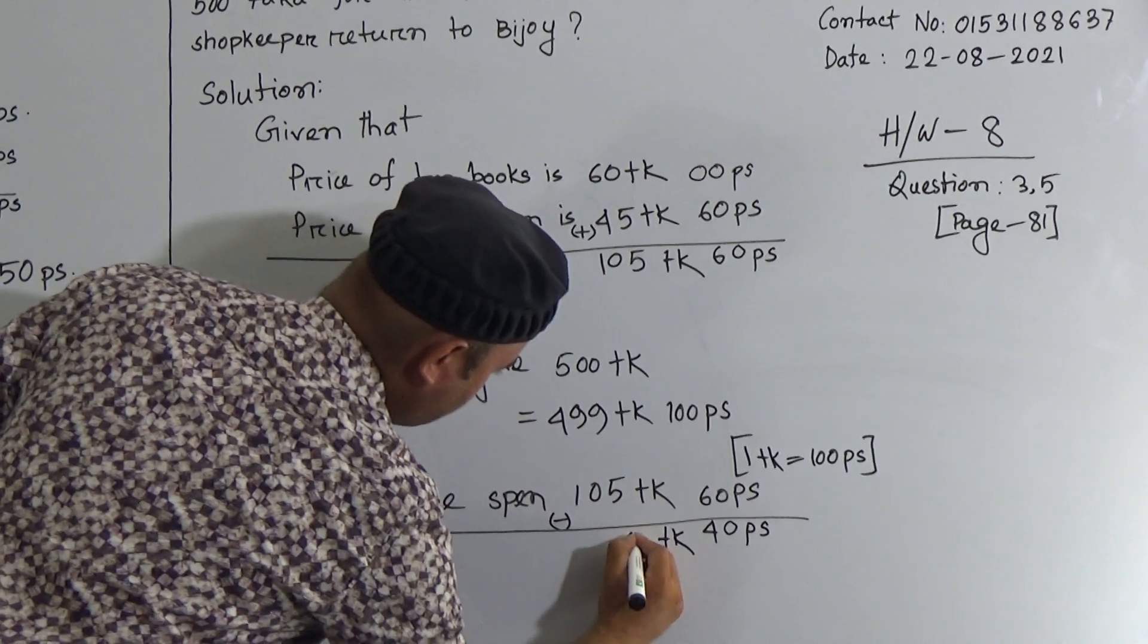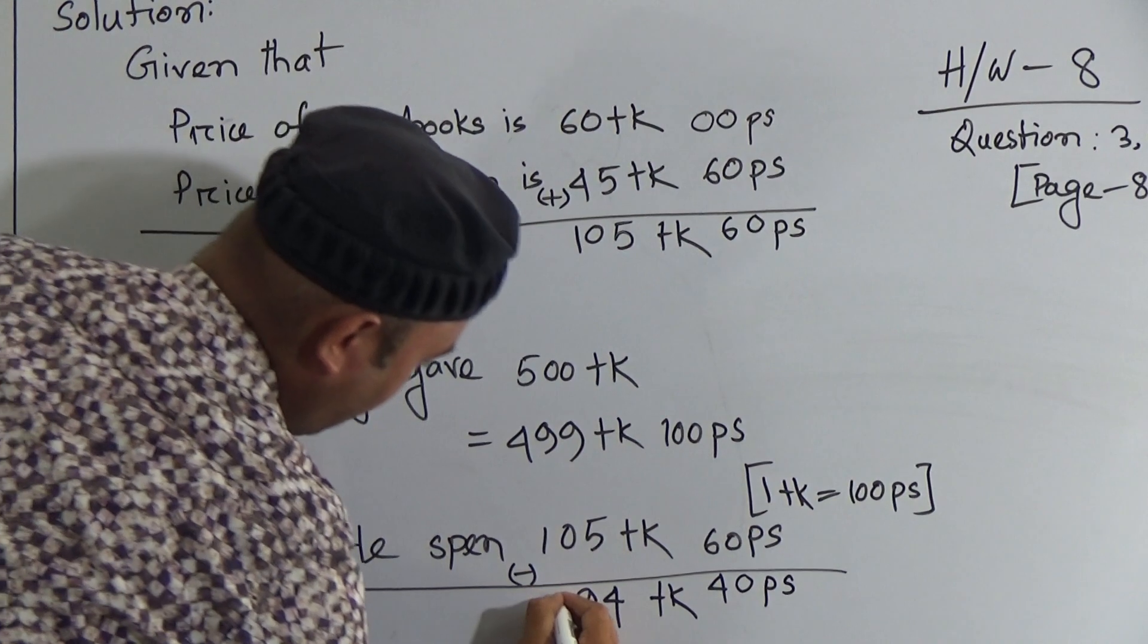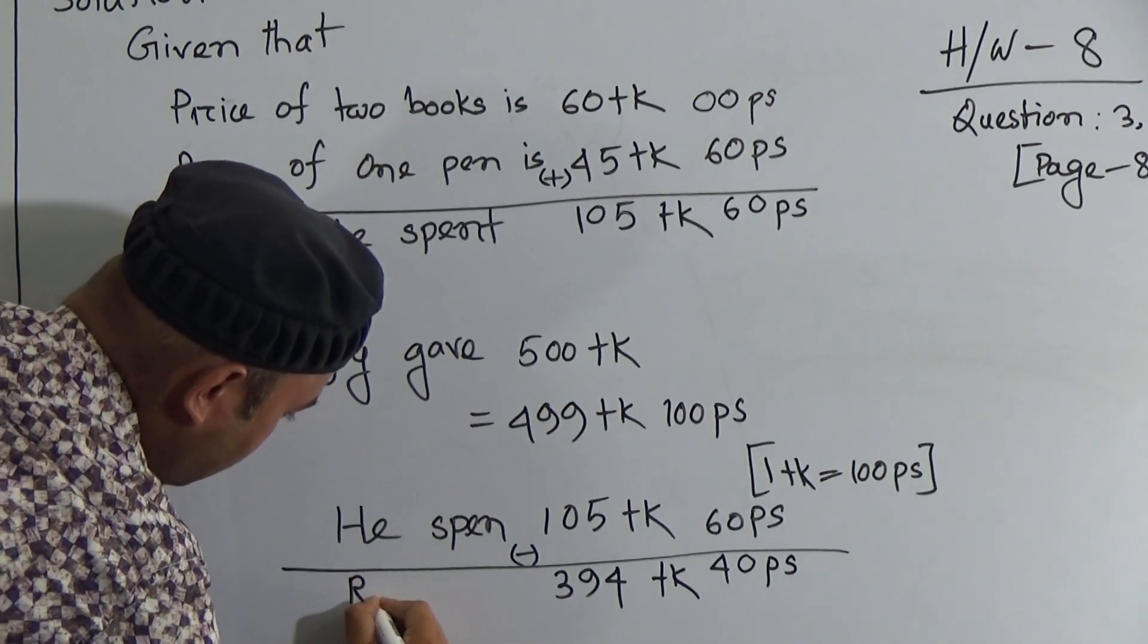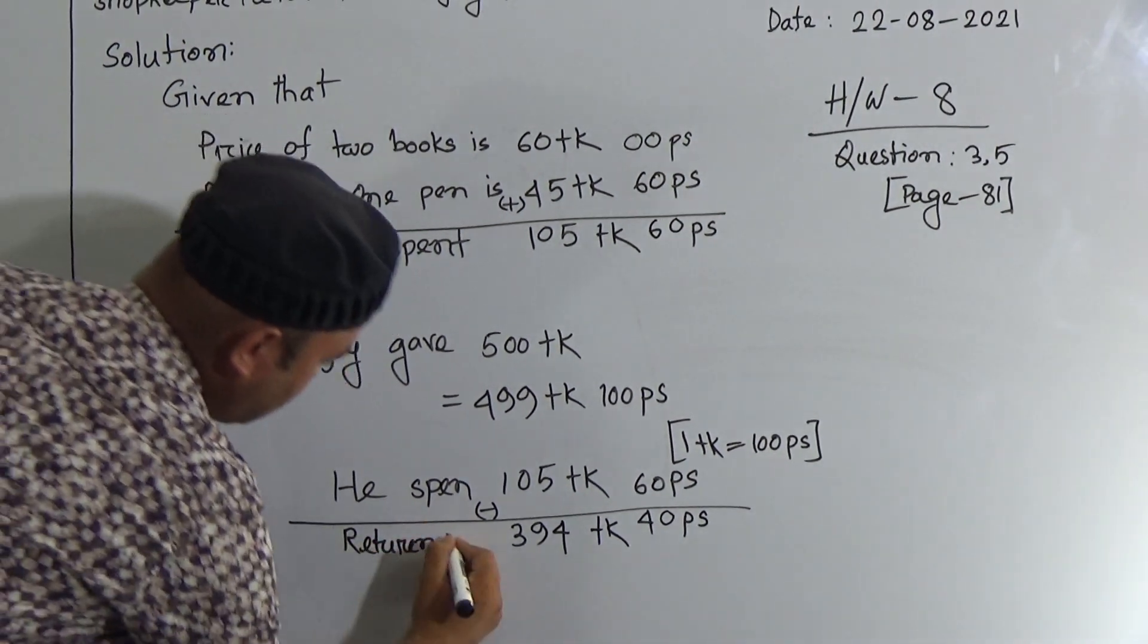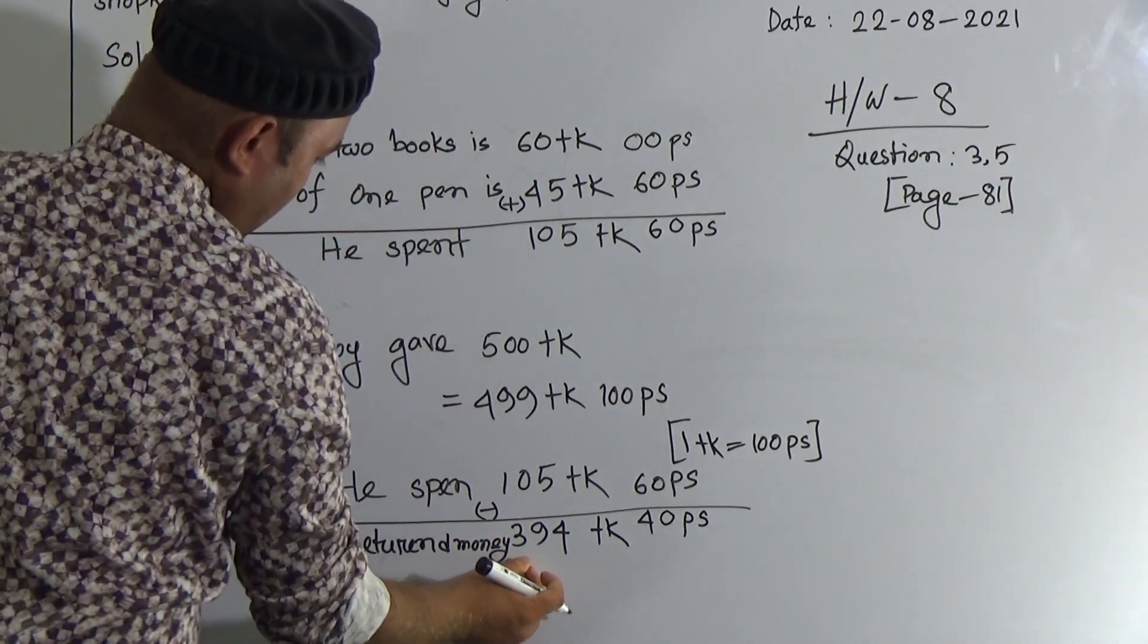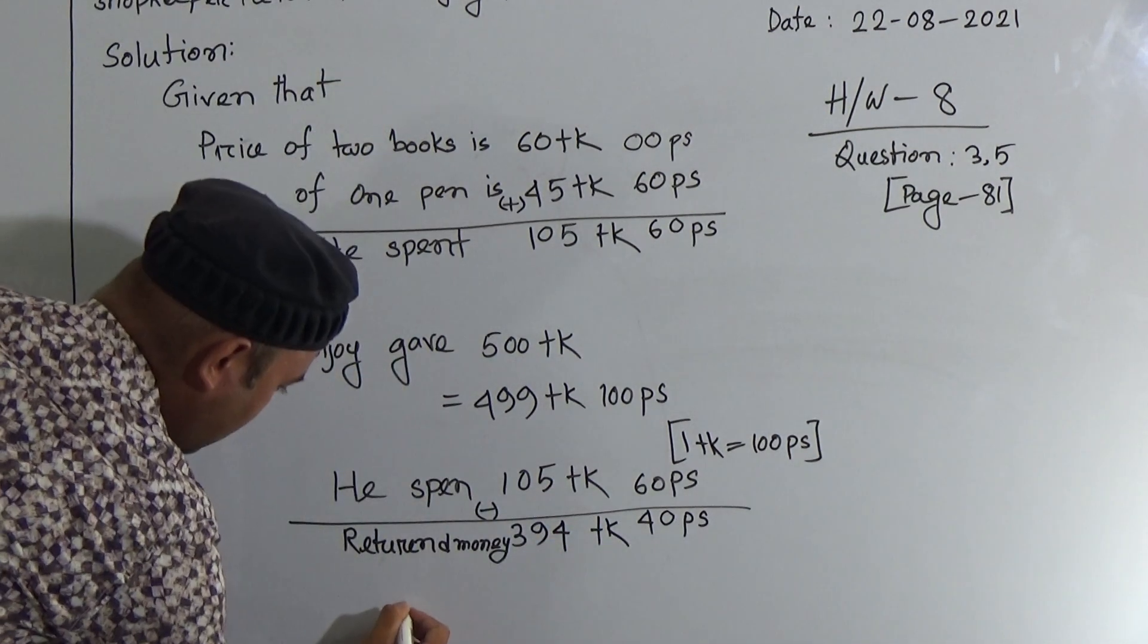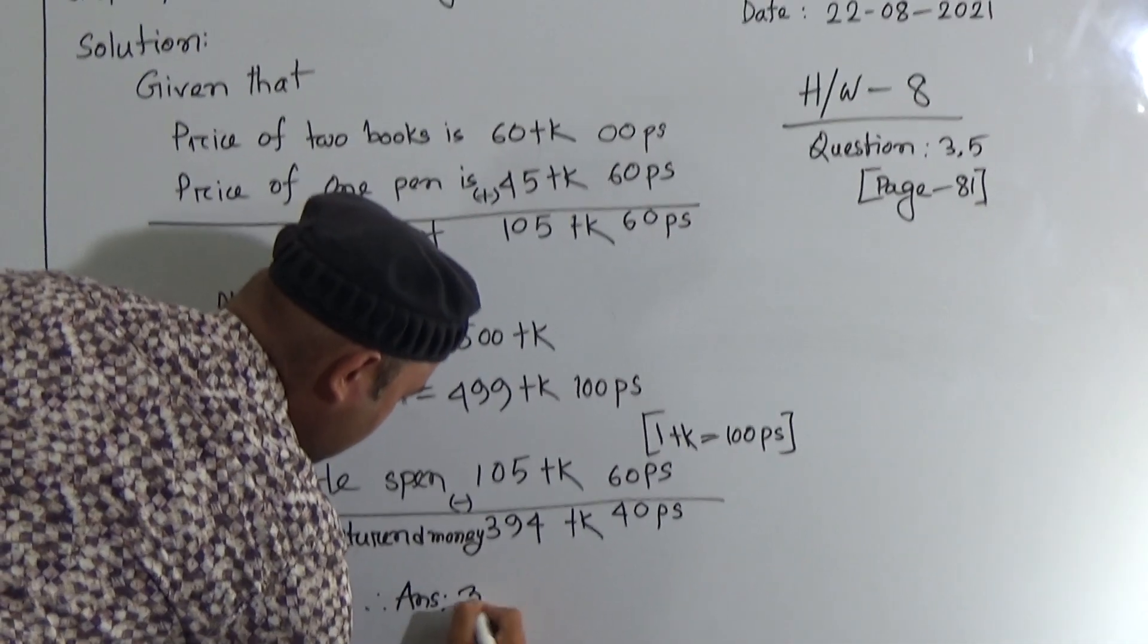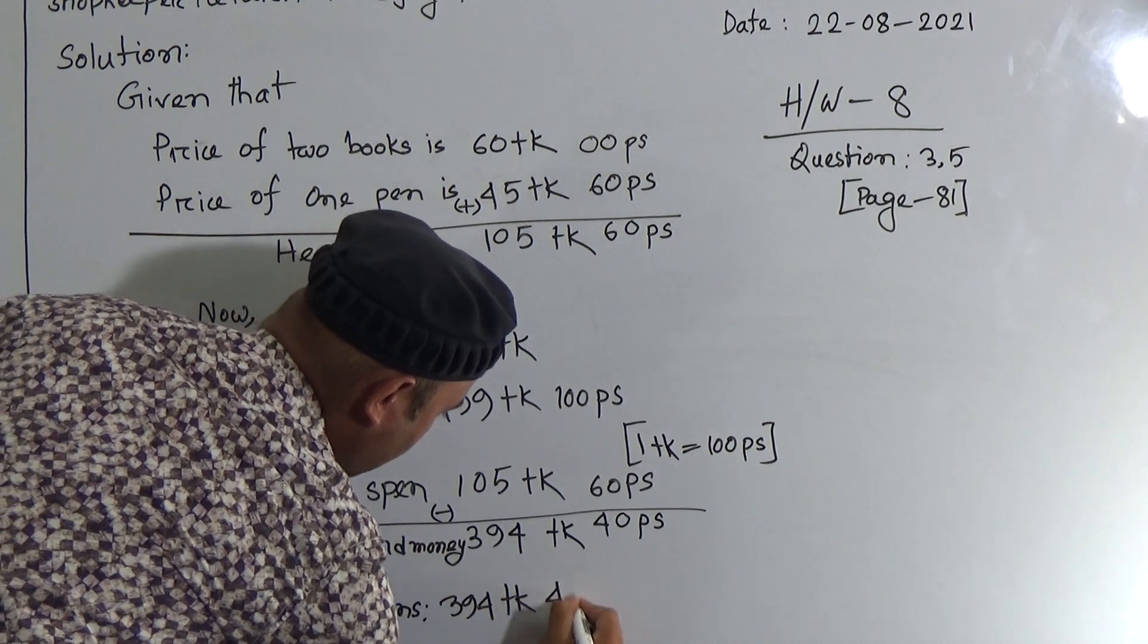And 5 from 9 here is 4, 0 from 9 here is 9, 1 from 4 here is 3. So return money, 394 taka 40 poises. So the correct answer is 394 taka 40 poises.